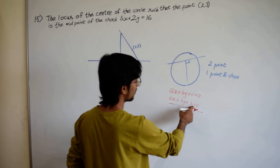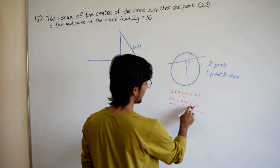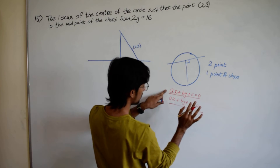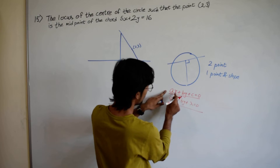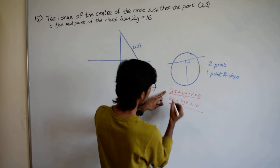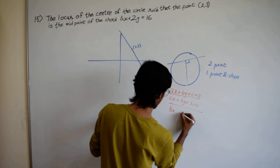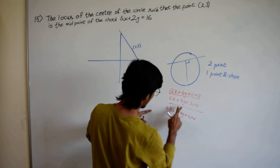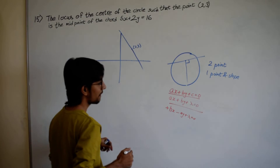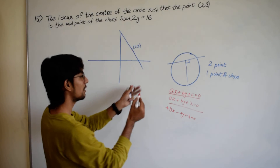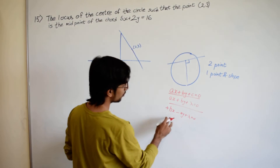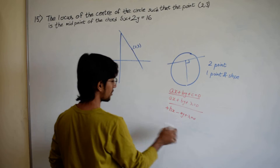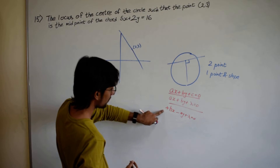To find a line perpendicular to ax plus by plus c equals 0, the trick is to interchange the coefficients of x and y and make one of the signs negative. So it becomes bx minus ay plus lambda equals 0. If one coefficient is already negative, it is preferable to change the sign of that one. This makes the equation easier to work with.